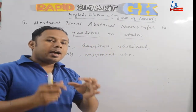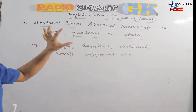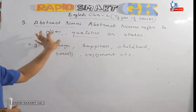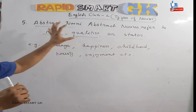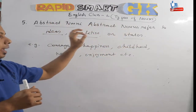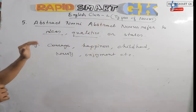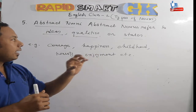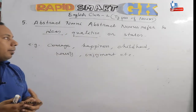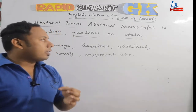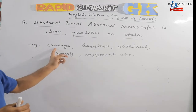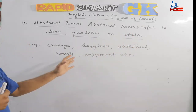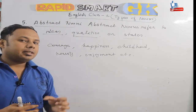We have abstract nouns, which refer to ideas, qualities, or states. Abstract nouns are things that cannot be seen or touched. Examples include: happiness, childhood, honesty, enjoyment. These are our abstract nouns.